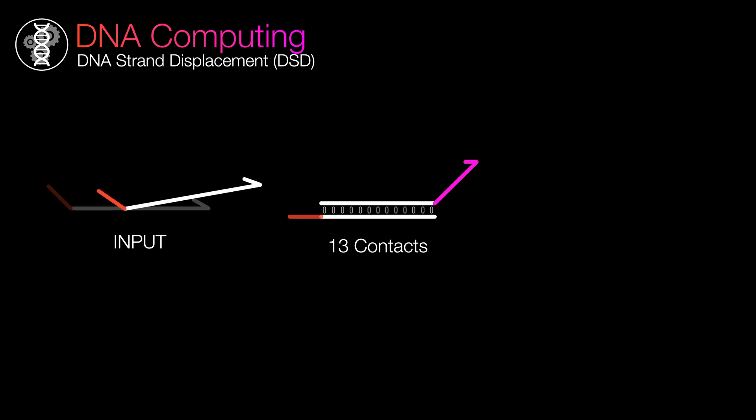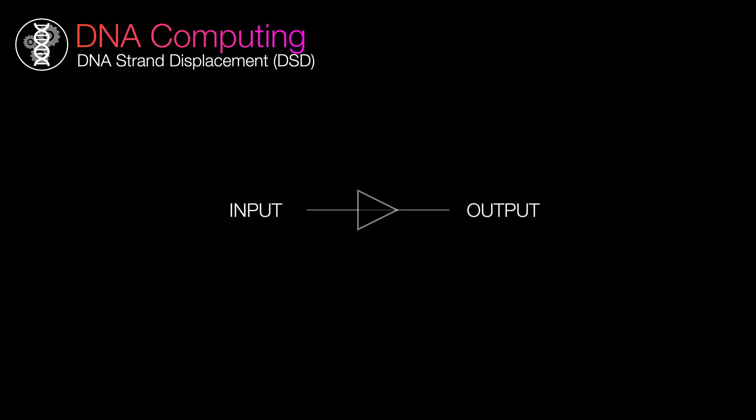This type of reaction is called DNA strand displacement, or DSD for short. The part where the input DNA attaches first is called the toehold domain, and the displacing part is called the displacement domain. And there you go, that's a basic buffer switch. But the transistor that we want isn't just a switch, right?